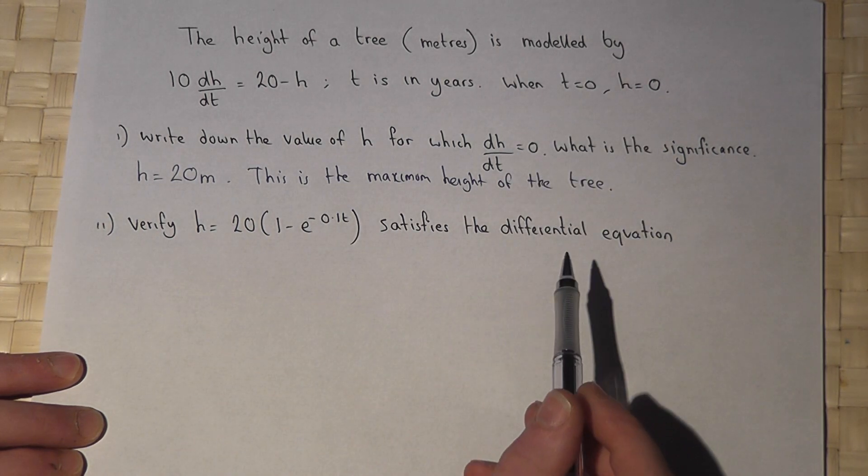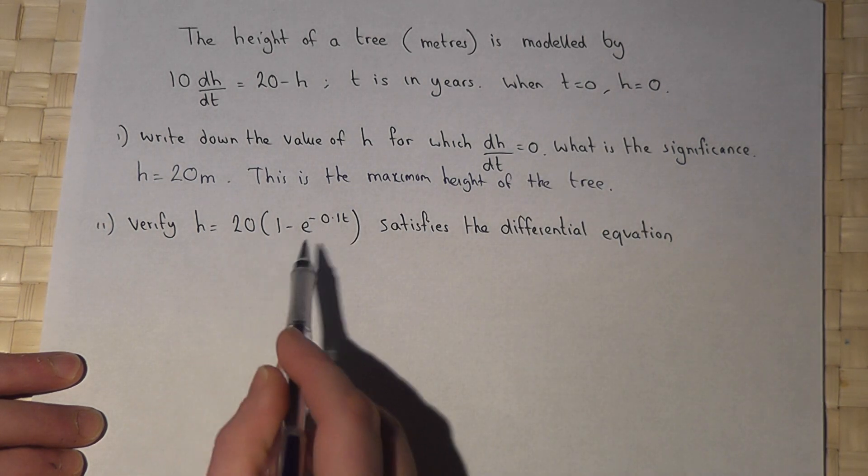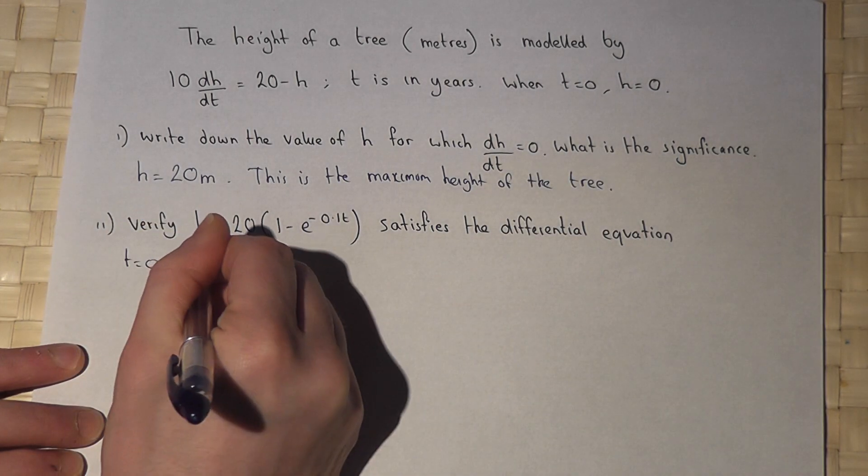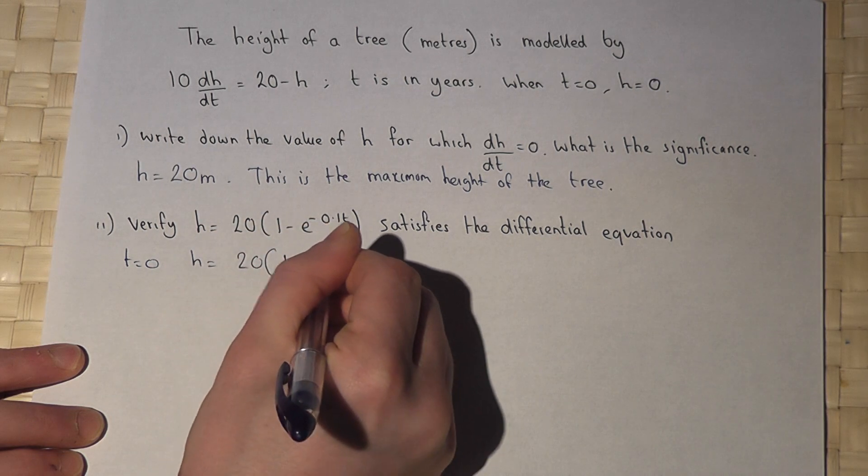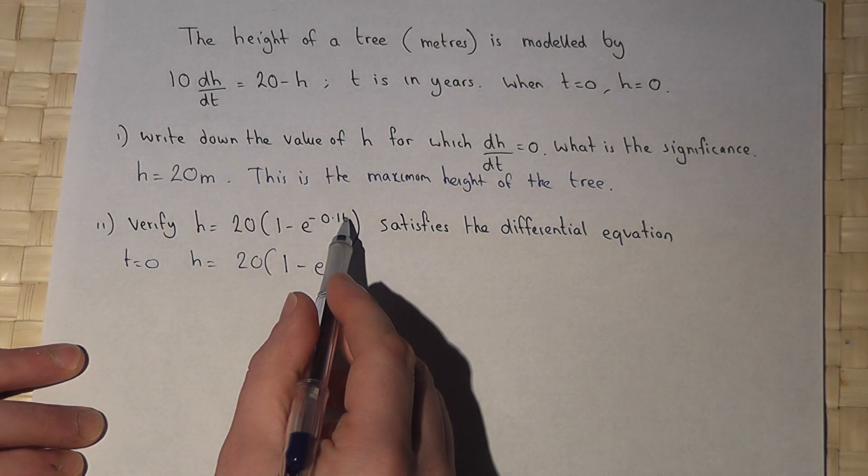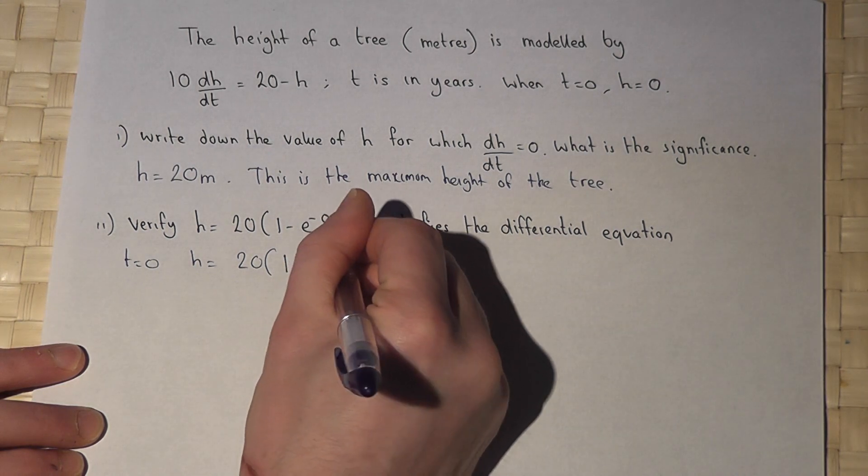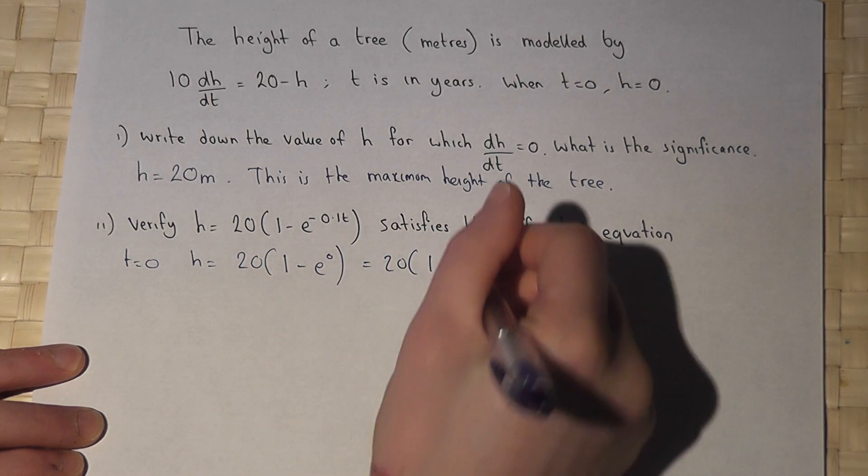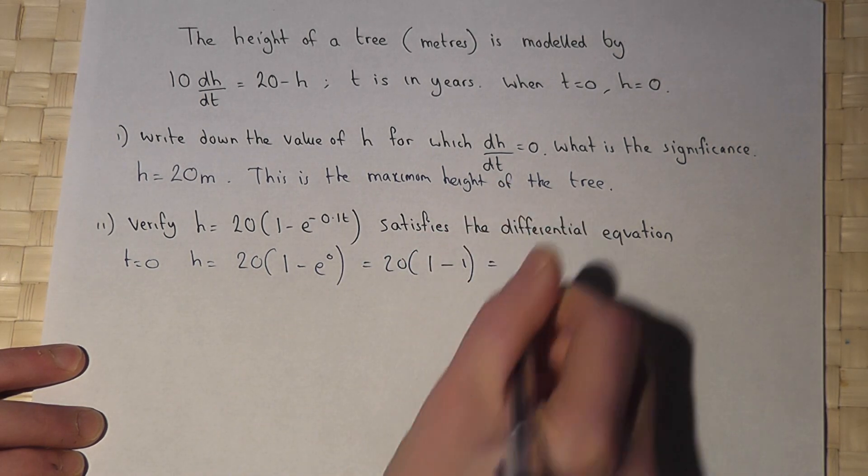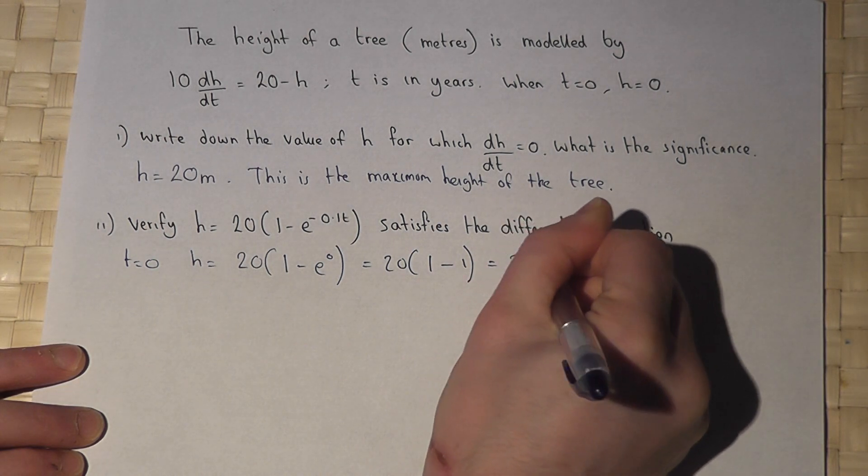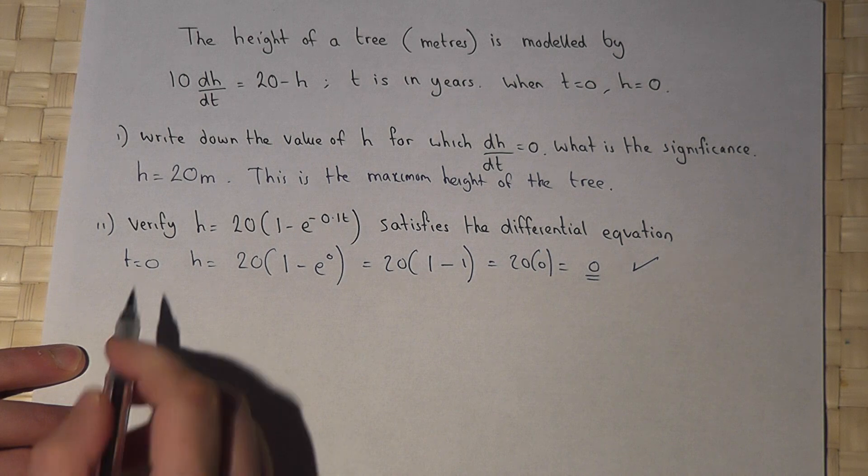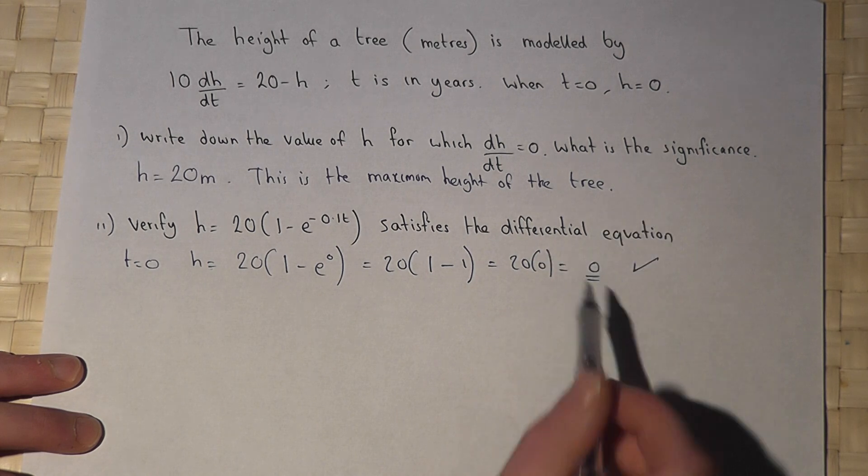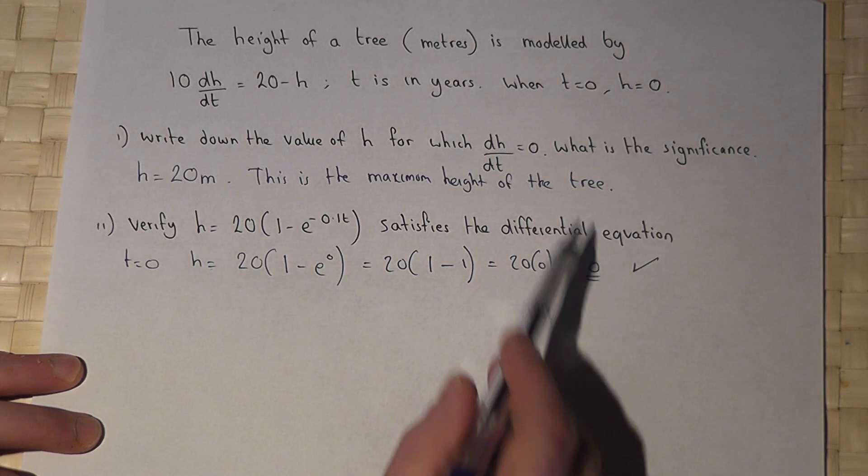equals zero, h does indeed equal zero. Does it actually satisfy the given condition? Well when t equals zero, h equals 20 times 1 minus e. When t is zero, minus 0.1 times zero is zero. So 20 times 1 minus e to the power of zero is 1. So 20 times 1 take away 1, 20 times zero equals zero. So yes, when t equals zero, h does equal zero. So the tree does start at a height of zero meters. So it satisfies the given condition.